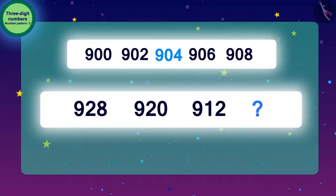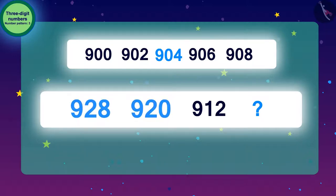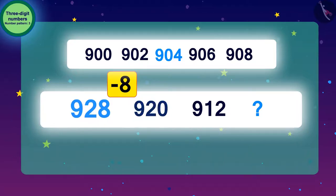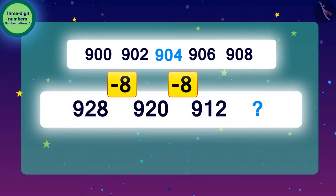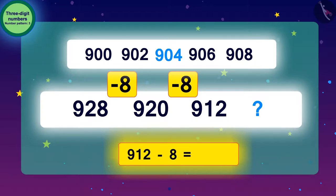Now we will find the number pattern of the second blank. To get from 928 to 920, we have to go 8 steps back — that means we have to subtract 8. To go from 920 to 912, we also subtract 8. Similarly, to find the next number in this pattern, we subtract 8 from every number.